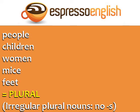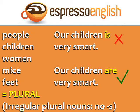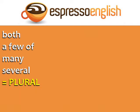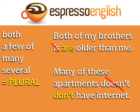People, children, women, mice, and feet are all plural. These are irregular plural nouns because they don't have an S, but they still take the plural form of the verb. For example, 'our children is very smart' is incorrect — the correct sentence is 'our children are very smart.' Both, a few of, many, and several are all plural. For example: 'both of my brothers are older than me' and 'many of these apartments don't have internet.'